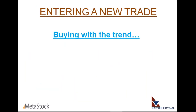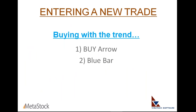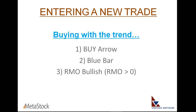Let's recap the rules. When going long, wait for: first, a buy arrow signifying a short-term trend cross; second, medium-term trend strength or a blue-colored price bar; and third, the RMO or green histogram greater than zero — meaning the RMO is bullish. When all three align, that's your point for going long. And keep in mind the first breakout is what's relevant, not the add-on breakouts.